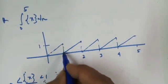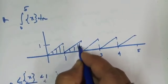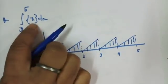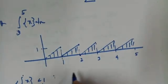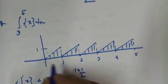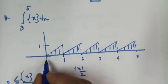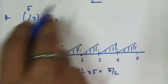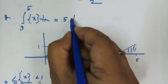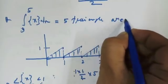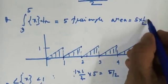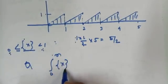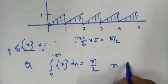The fractional part function is discontinuous at integer points. The graph from 0 to 5 consists of 5 triangles. Each triangle has base 1 and height 1, so each area is 1/2. For 5 triangles, the total area is 5/2. In general, ∫₀ᴺ {x} dx = N/2, where N is an integer.